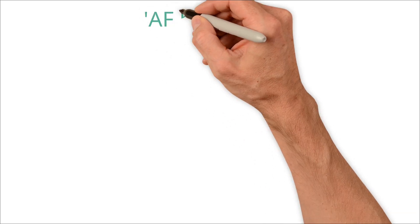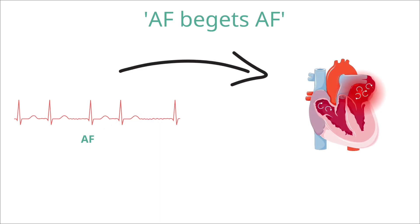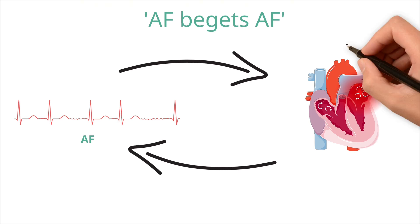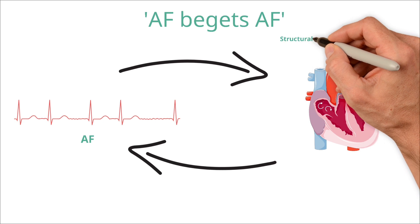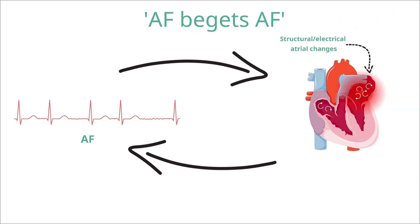An important concept is that AF begets AF — the development of AF is itself a risk factor for further AF. The longer a patient is in AF, the more likely they are to remain in AF or get it again, because AF itself causes changes to the atria that promote further AF and AF maintenance. This process has recently been termed atrial cardiomyopathy.